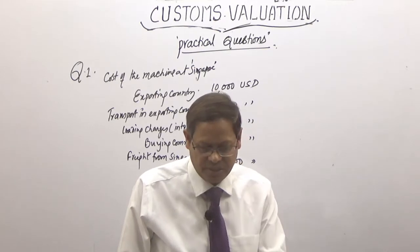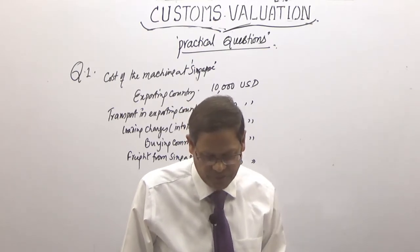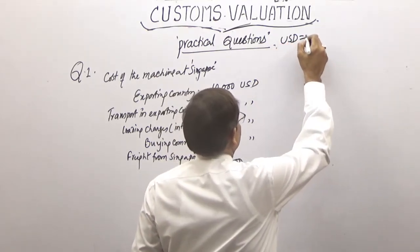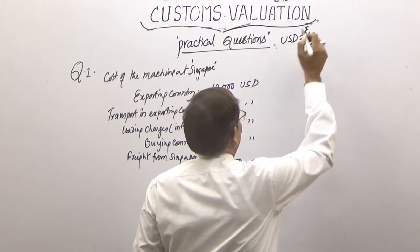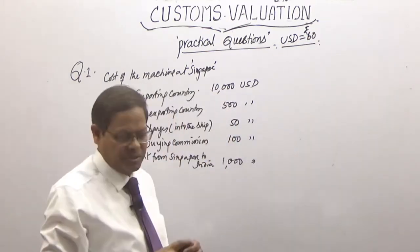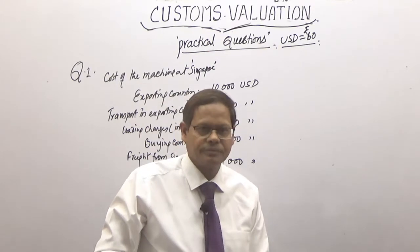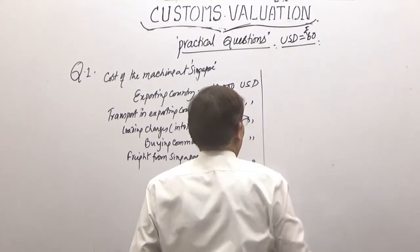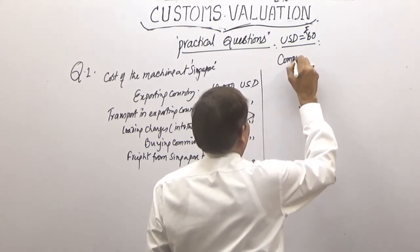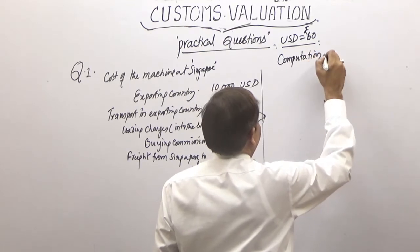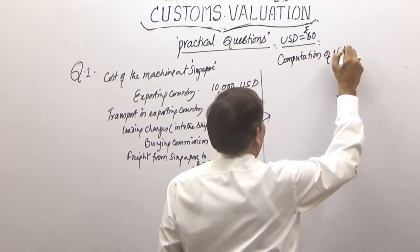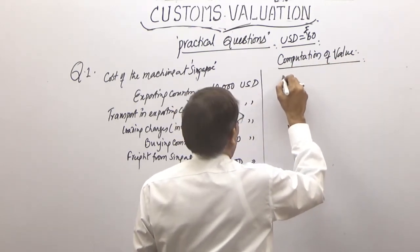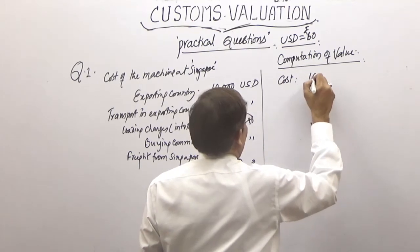One US dollar is equal to 60 rupees, as per the CBC notification. Only the CBC notification rate is valid. Now let us begin the computation of value. Number one: cost is 10,000 US dollars.